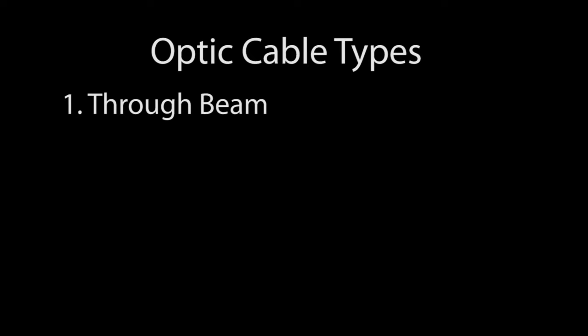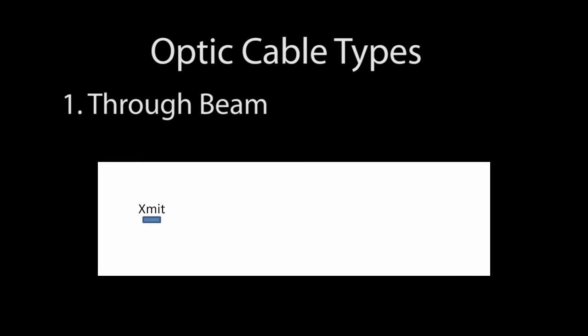The through beam is when you have two separate heads. One transmits light, the other receives it. When the object passes between the fiber optic heads, it breaks the continuity of the light.